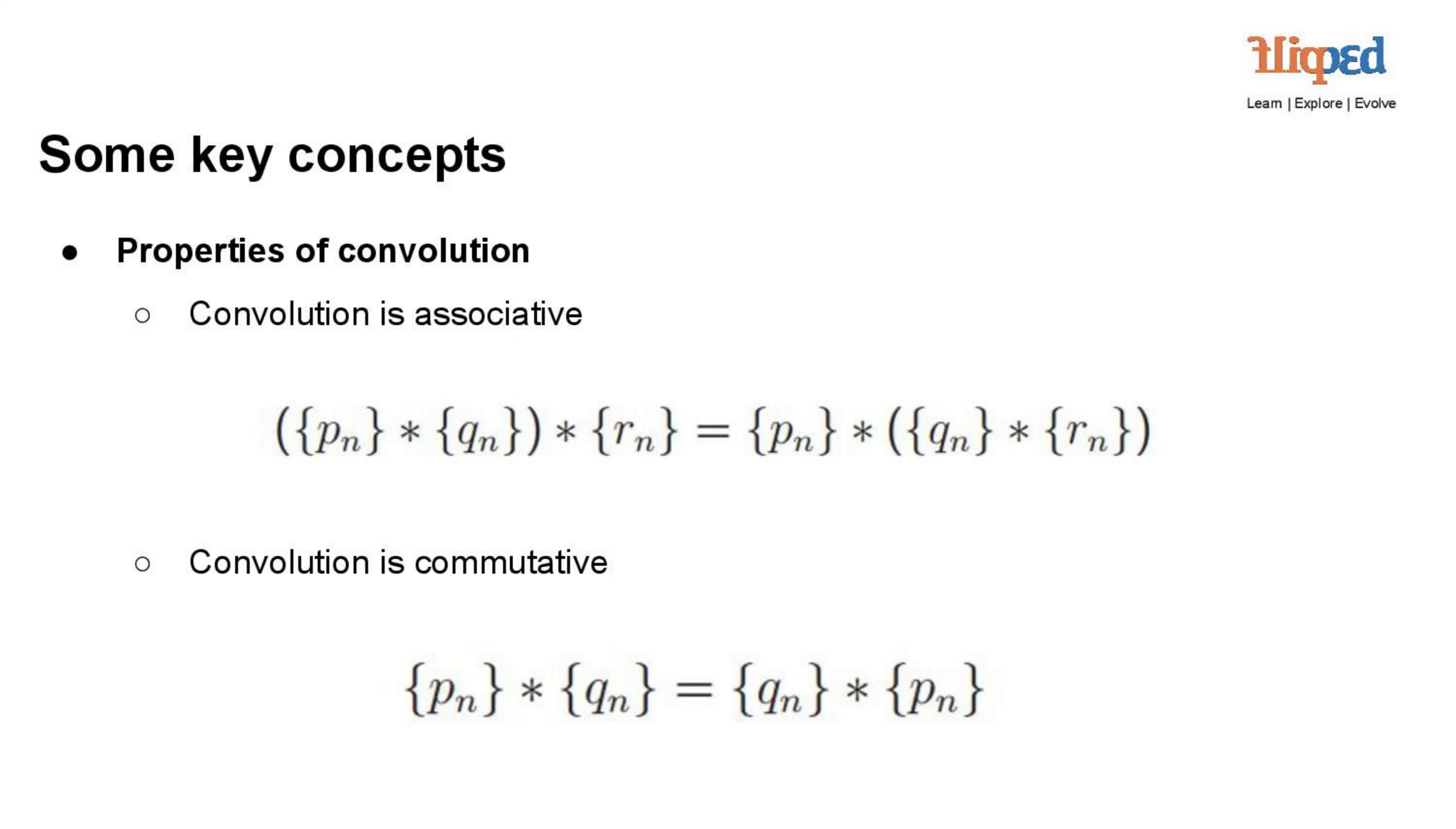Convolution is associative, meaning that the order in which multiple convolutions are performed does not affect the final result. Mathematically, for three sequences p(n), q(n), and r(n), the associative property can be expressed as: